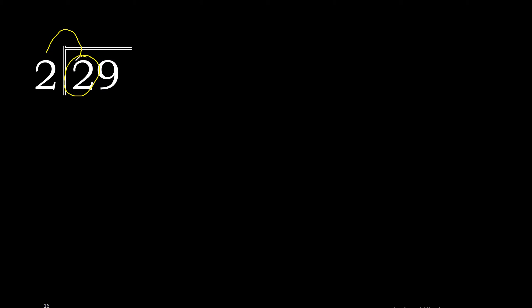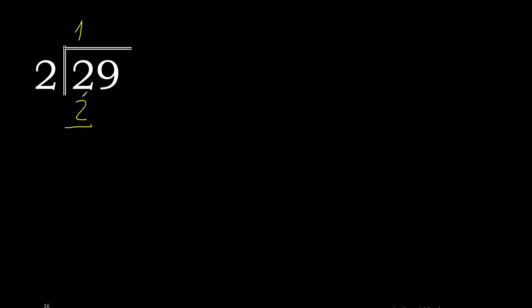29 divided by 2. 2 is not less than 2. Therefore, wait — 2. 2 multiplied by 2 is 4, excessive. 2 multiplied by 1 is 2. 2 is the nearest multiple.